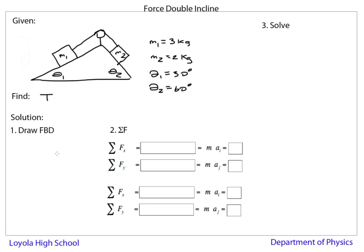Using the force model, it's a three-step process. I'm going to draw each of the objects—two objects, two FBDs. For the first object, the m1 object, I have a tension pulling upwards. I have Fn1, a normal force, and I have m1 g pointing down.